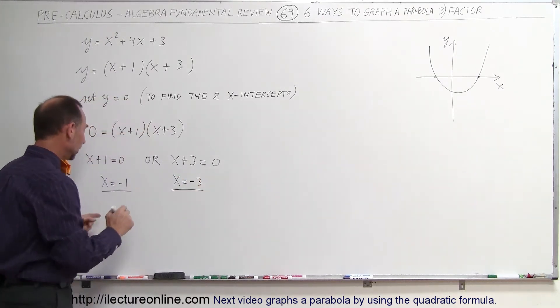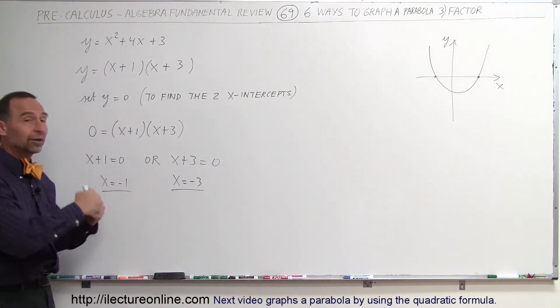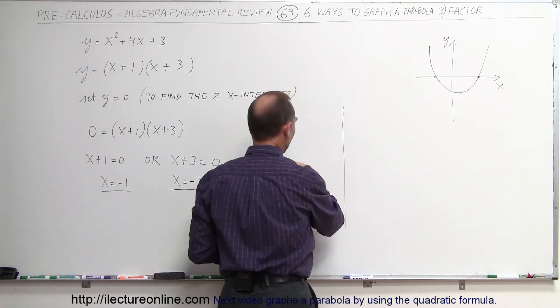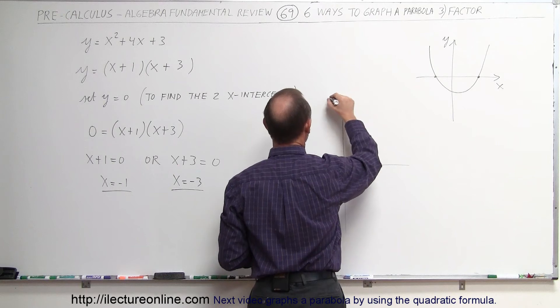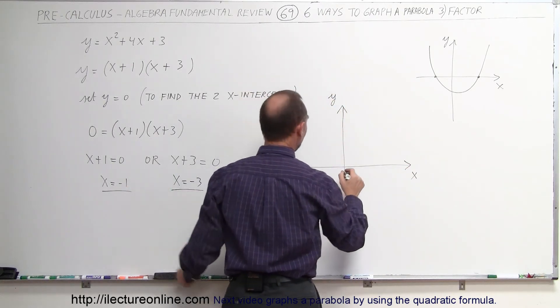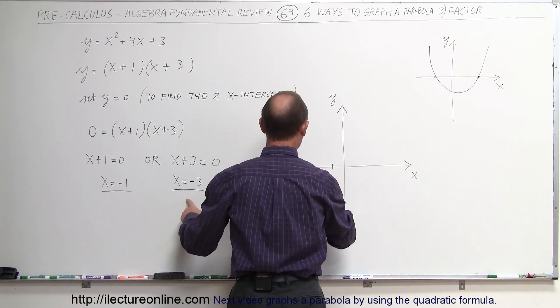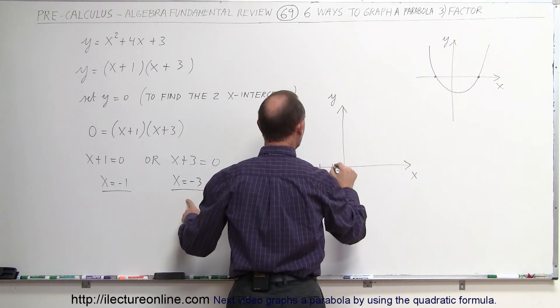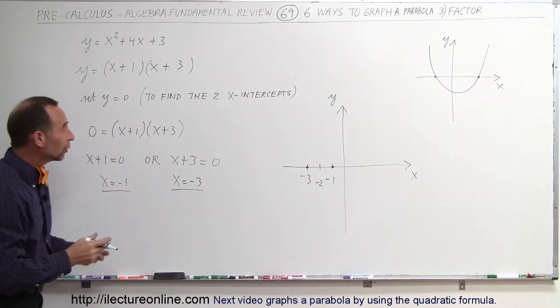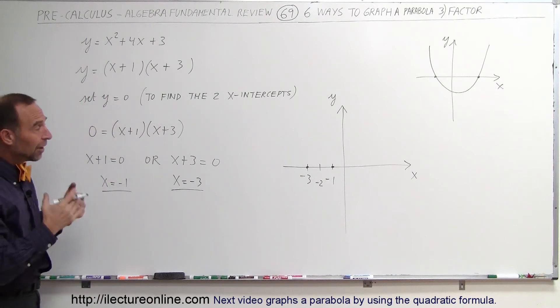So what this means is those are the two places where the parabola crosses the x-axis. So when we put a graph on the paper, in this case on the whiteboard, here's the y-axis, there's the x-axis, x equals negative one, which is right there, x equals negative three, which is right there, this is of course negative two. So we know that the parabola crosses those two places and we know that the parabola opens upward.